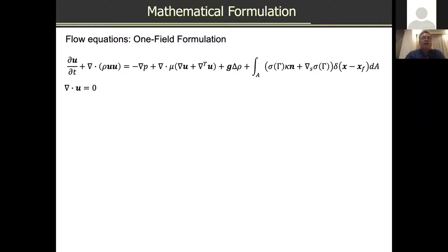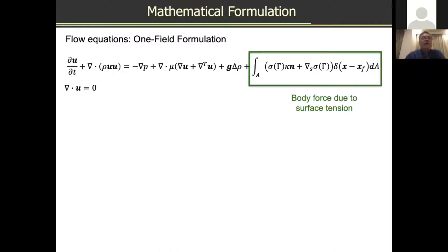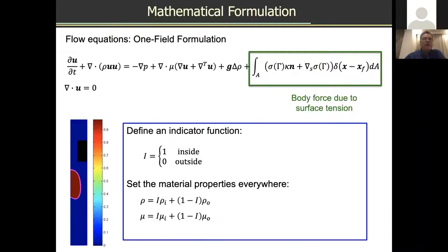We allow material properties — density and viscosity — to vary discontinuously across the interface, and we have an additional term to account for surface tension. We solve the incompressible flow equations with an incompressibility condition, and we define a color function which indicates the different phases. For a two-phase flow, a color function value of one refers to the inside of the dispersed phase and zero is outside. Once you determine this indicator function, you can set material properties everywhere in the fluid domain.